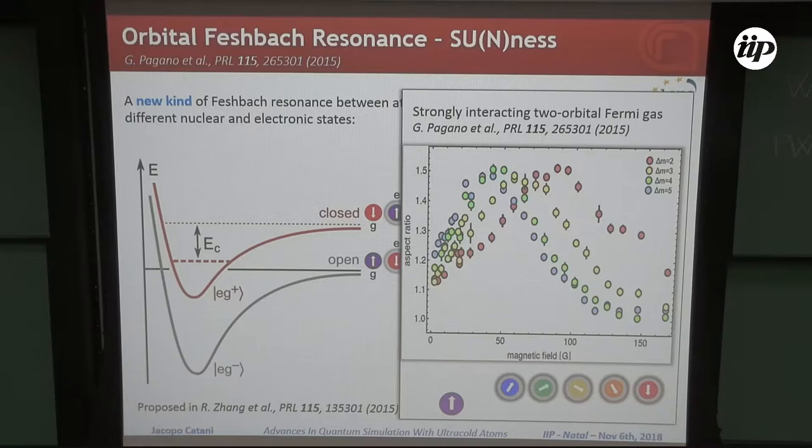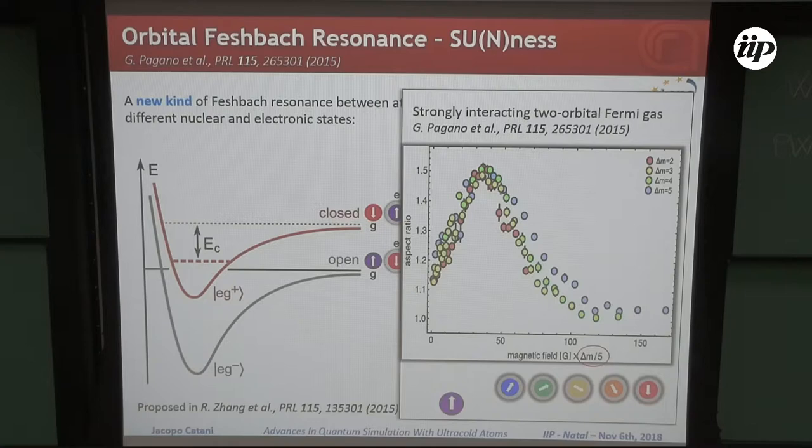This is not surprising, because if you then re-plot the data set as a function of a scaled magnetic field, where you take into account the magnetic sensitivity difference of each pair you are probing, then all of the data sets collapse to a single feature. This is witnessing the underlying SU(N) symmetric character of our system interactions.